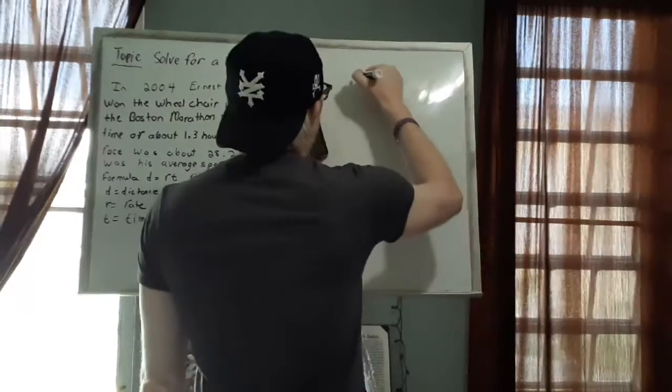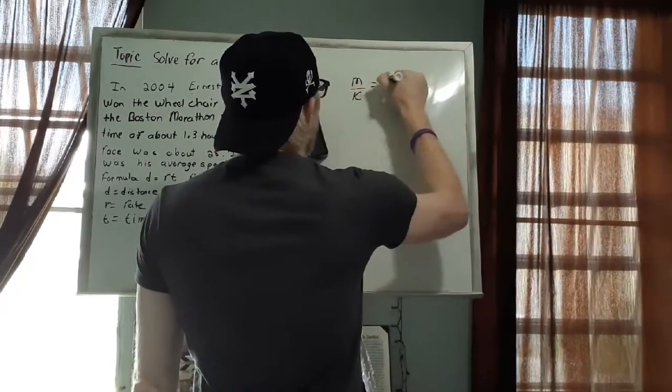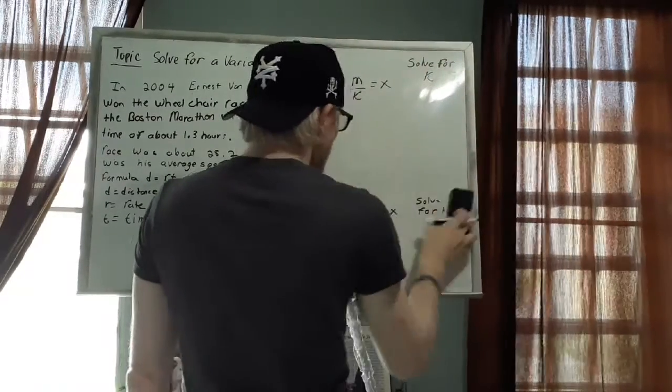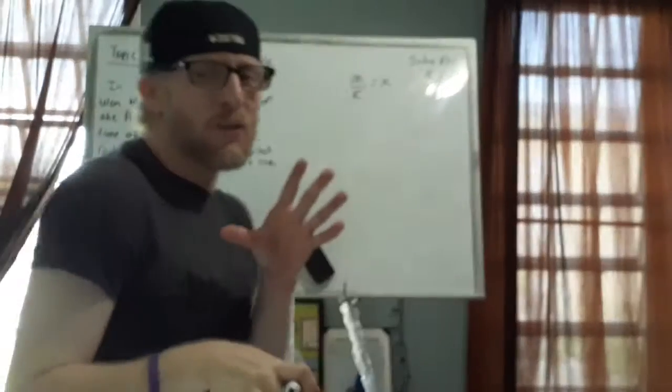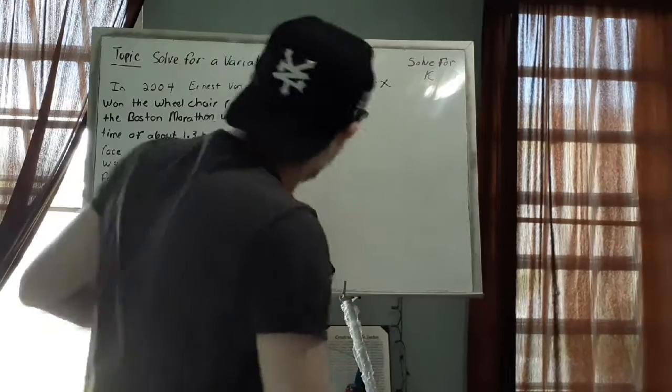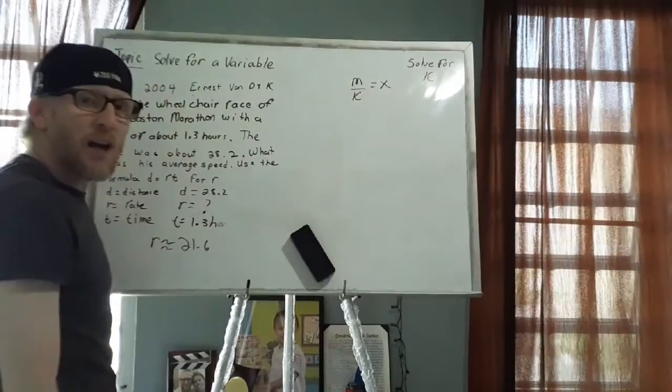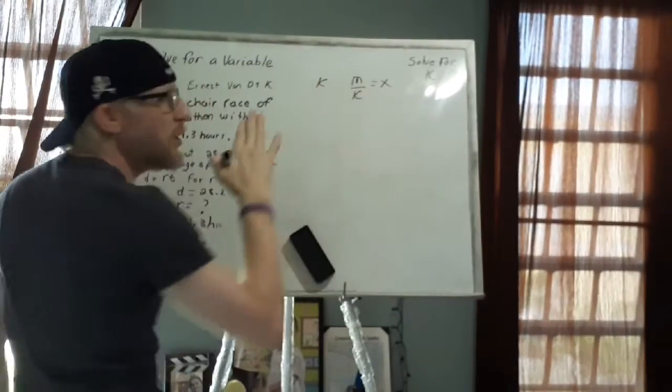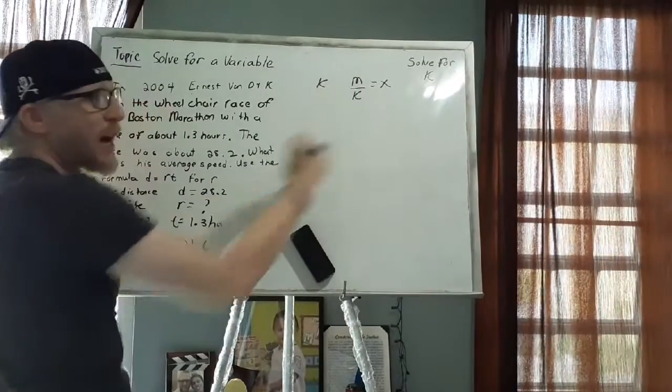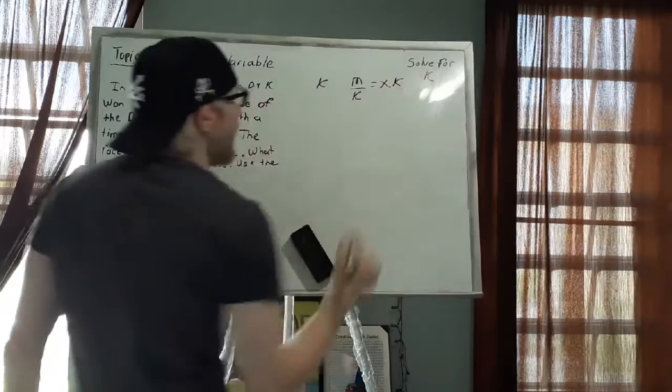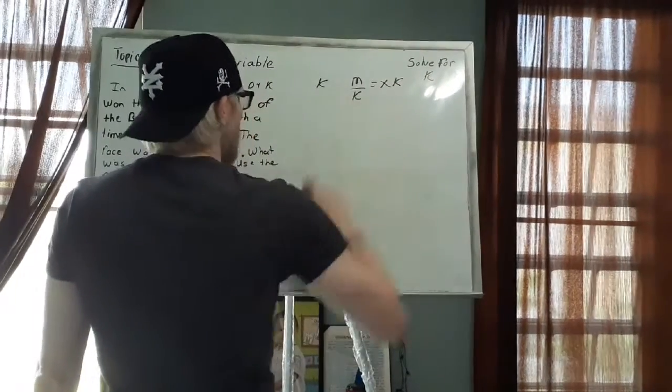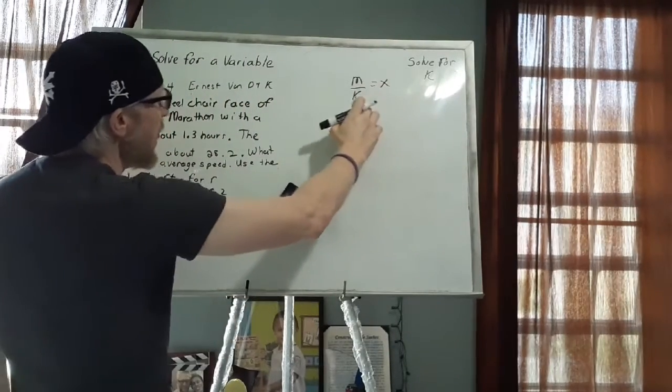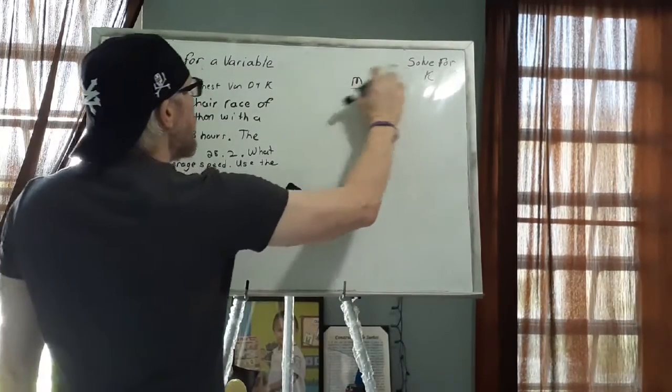So let's do the last one of this video. And then we'll be done. I have the formula M divided by K equals X. And I want to solve for K. Now solving for K is really easy. Well, if I want to solve for K and K is the denominator of this fraction, the first thing I want to do is multiply by K just so I can eliminate the fraction. So I'm just going to multiply by K here. And what I do, very important rule of algebra, what you do on one side of the equation you have to do on the other side. So on this side I also have to multiply by K.